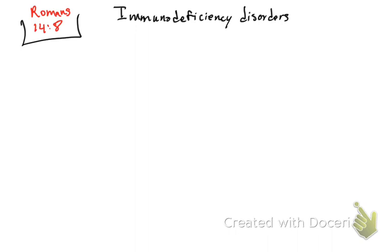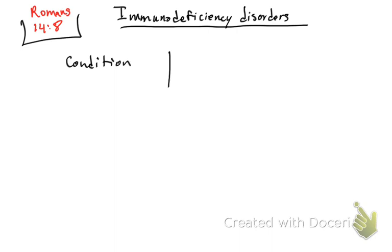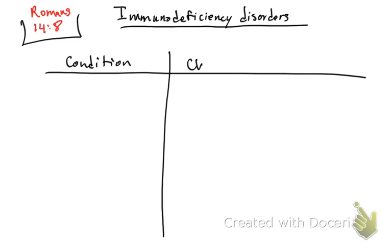Now we're going to be seeing the immunodeficiency disorders. We're going to see the condition and then the characteristic feature of the condition. On one side we're going to see the condition, and on the other side we are going to see the characteristic features.